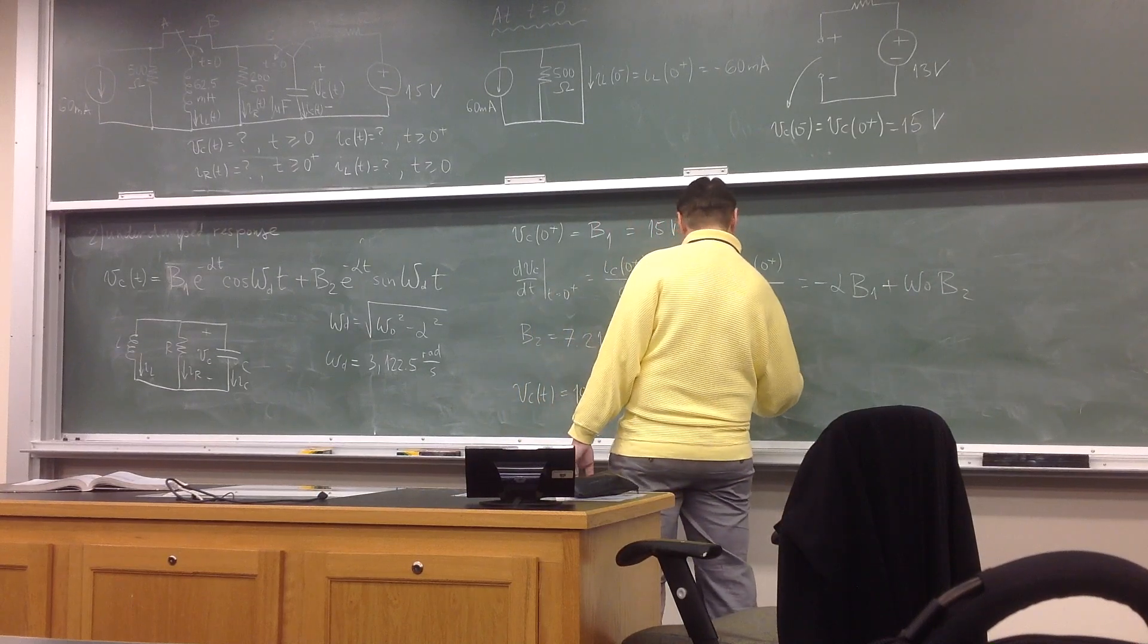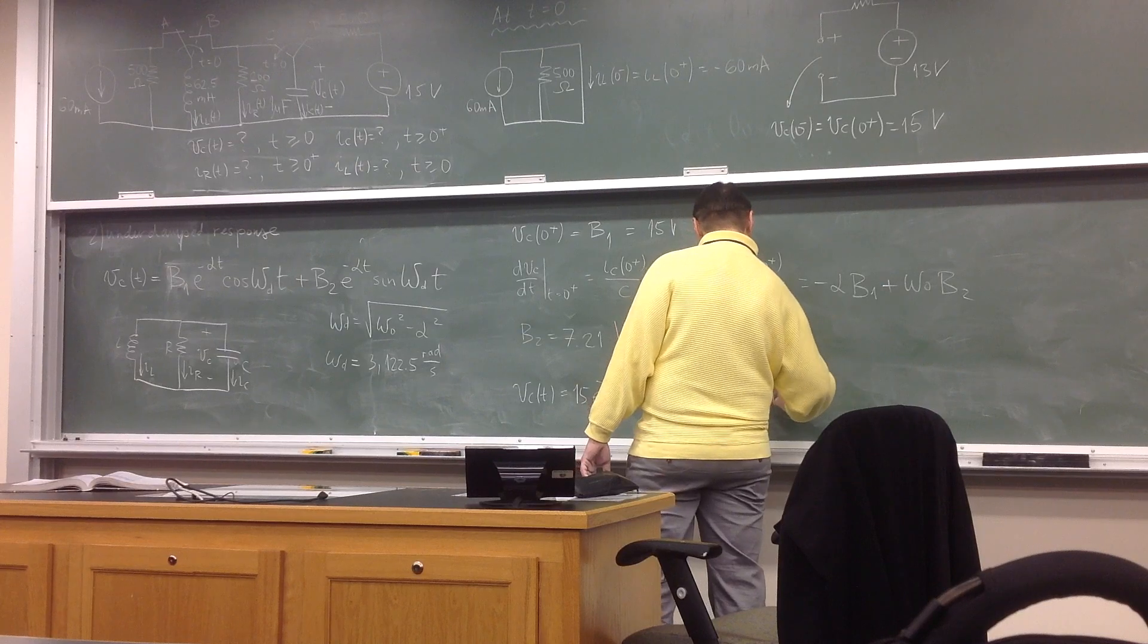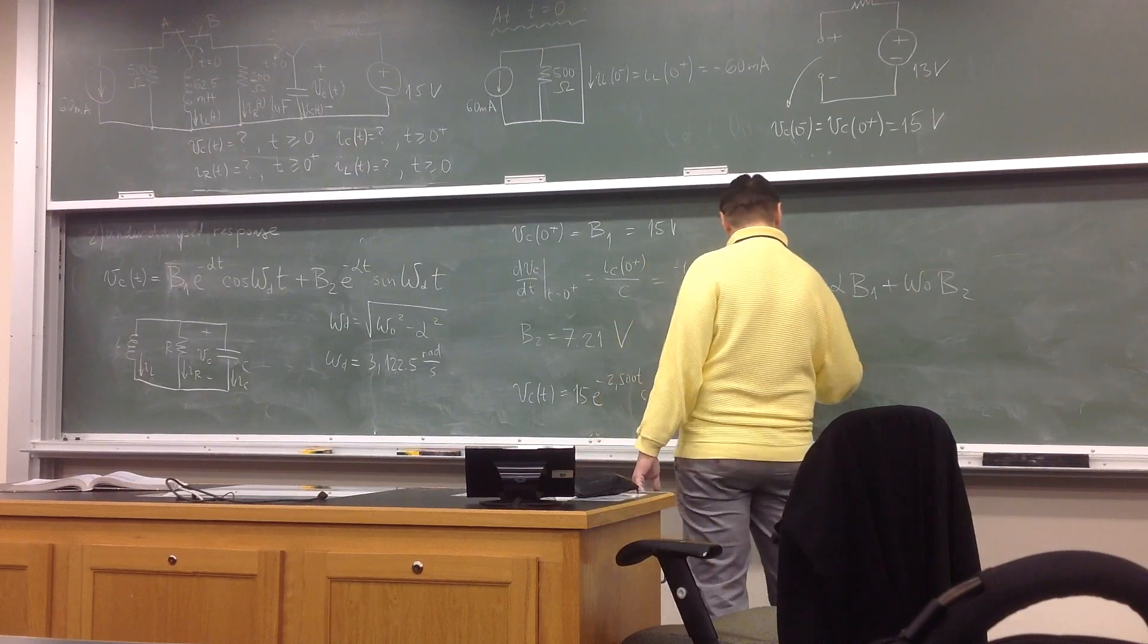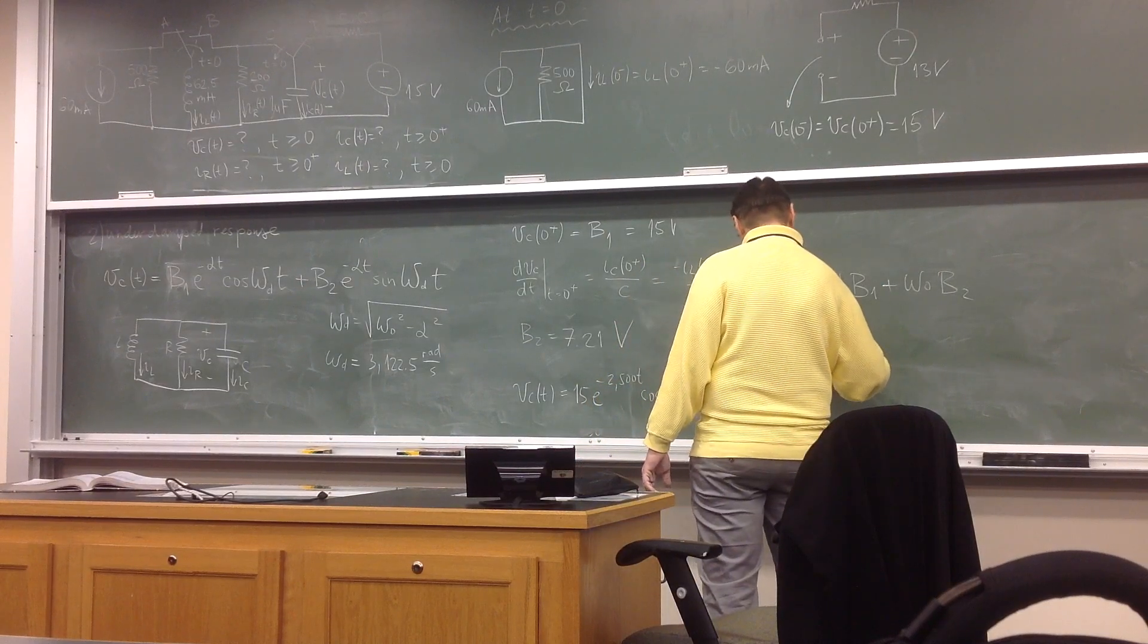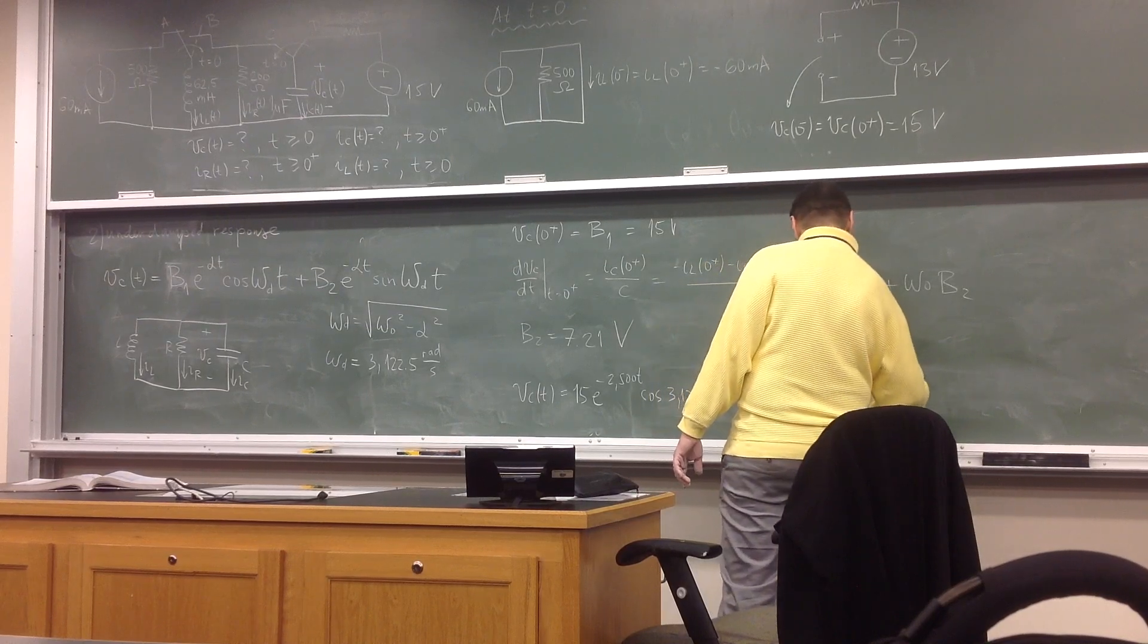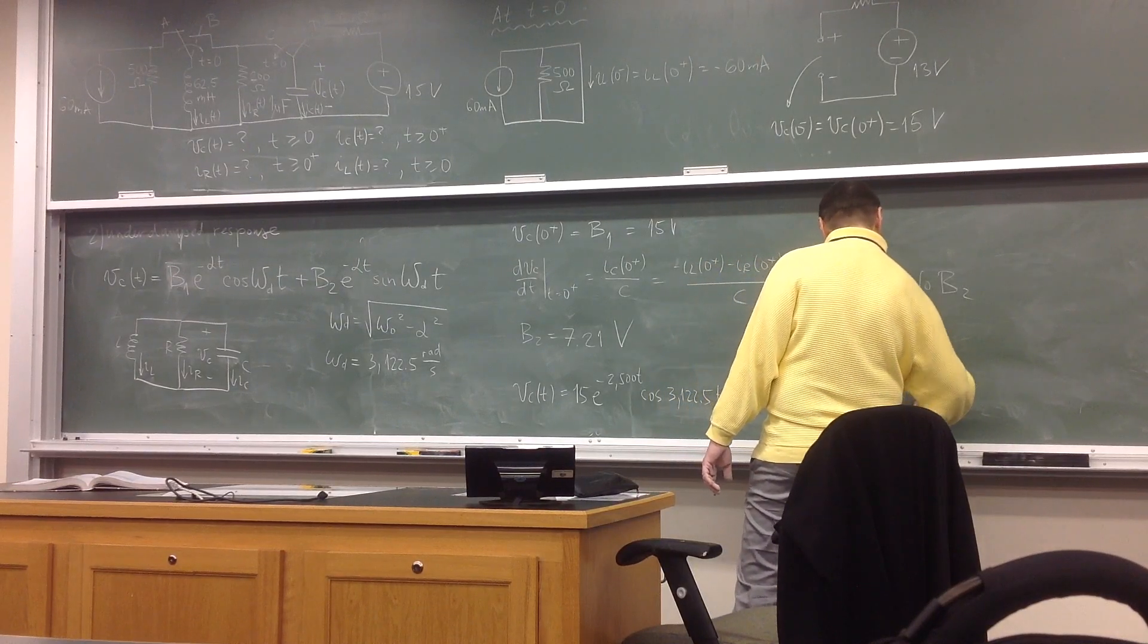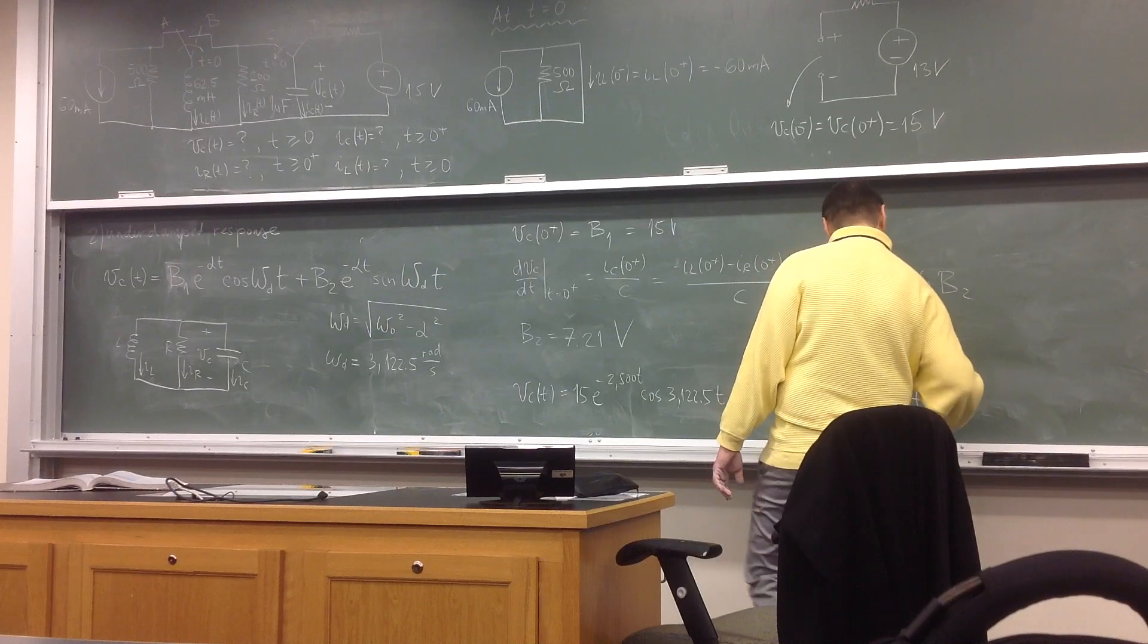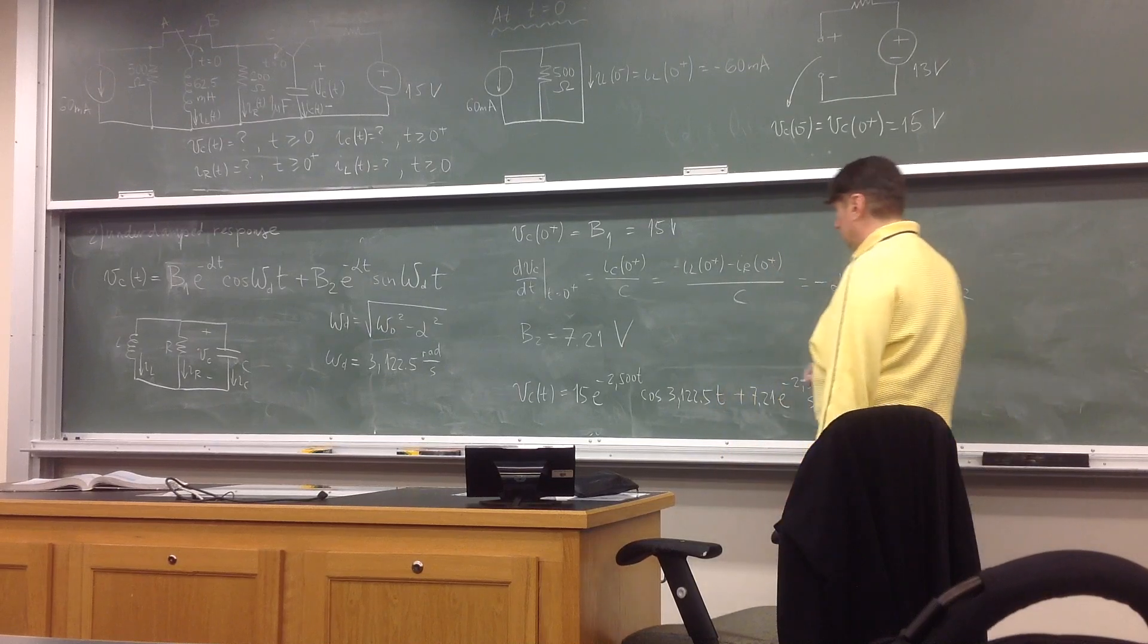Plus 7.21e^(-2500t)sine(3122t). So t greater than 0. This is the vault, of course.